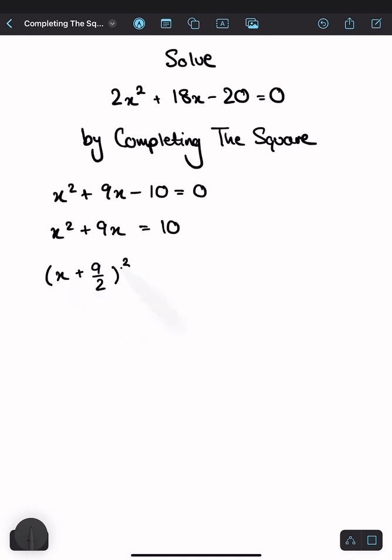Now, if we expand this, we want to get back to x squared plus 9x. So let's just see how that goes. So expanding x plus 9 over 2 squared, you get x squared plus 9 over 2x plus 9 over 2x plus 9 over 2 squared. 9 over 2x plus 9 over 2x is just 9x.